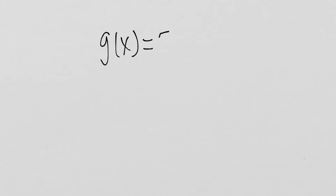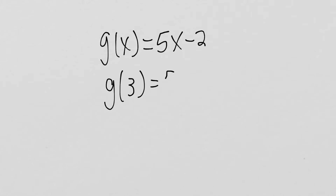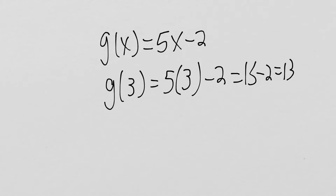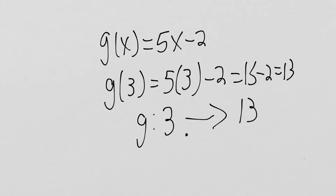As another example, if I have g of x equals 5 times x minus 2, and if I say g of 3, that's going to be 5 times 3 minus 2, which is 15 minus 2, which is 13. So I'm taking my input 3 and sending it to an output of 13 by multiplying by 5 and then subtracting 2. Those are our functions — they send an input to an output.